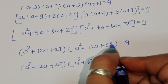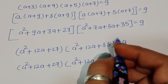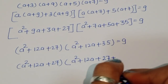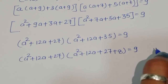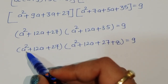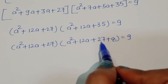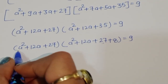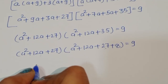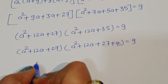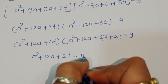We convert 35 into 27 plus 8, because we need to take the common expression A² + 12A + 27. That is why we are converting this number into 27 + 8 form. Now you can see the number A² + 12A + 27 appears in both factors.